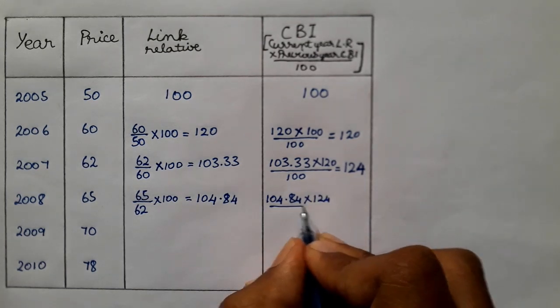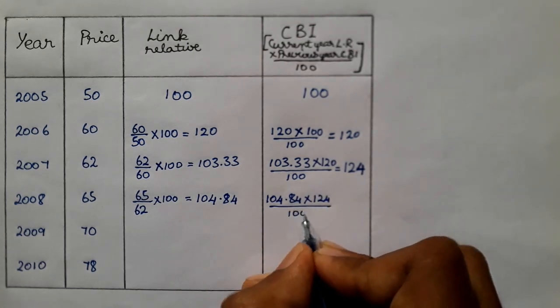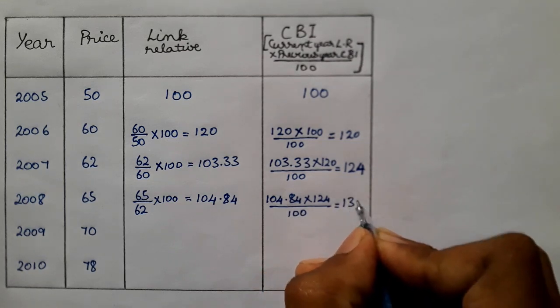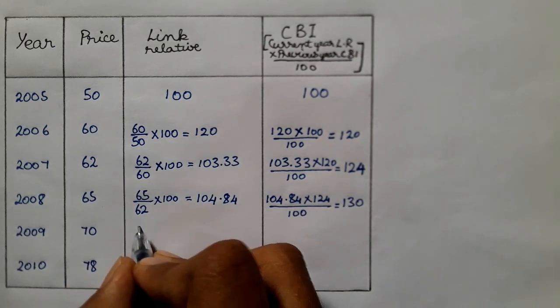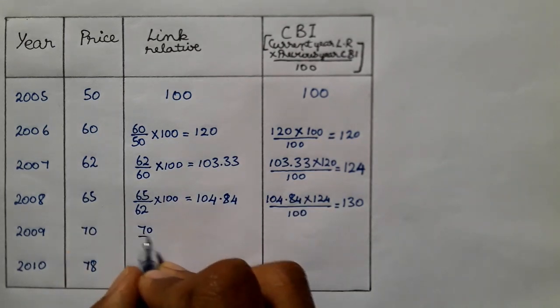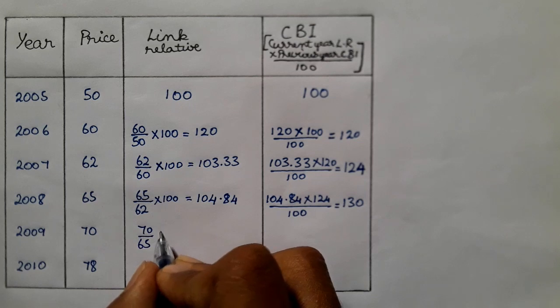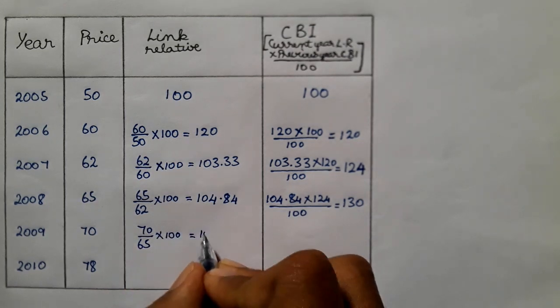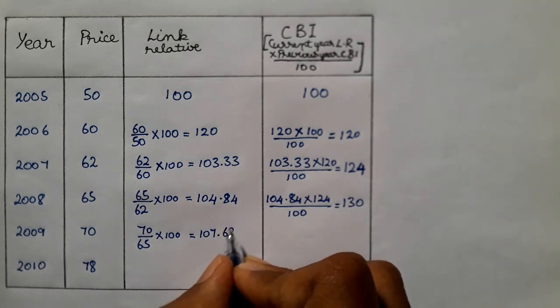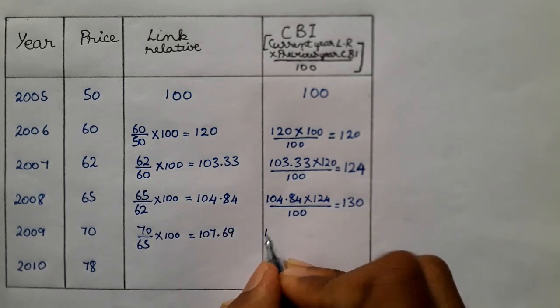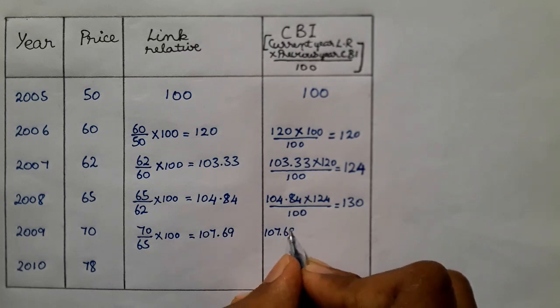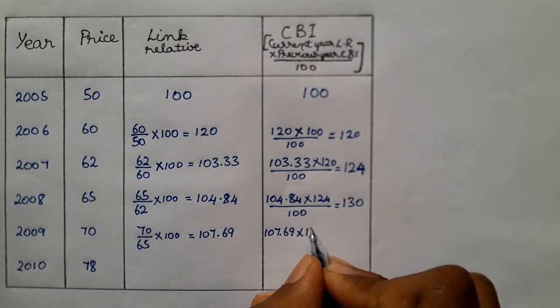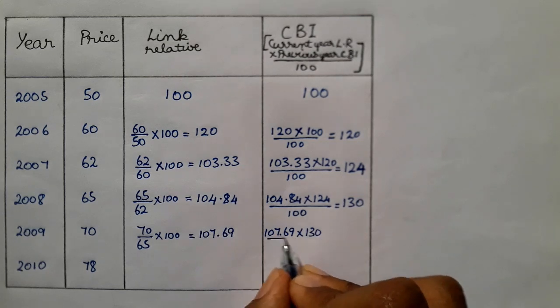If we solve this is 70, this is 65 into 100. So if we solve this is 107.69. So now 107.69 into this previous answer is 130, so divided by 100. If we solve this is 140.